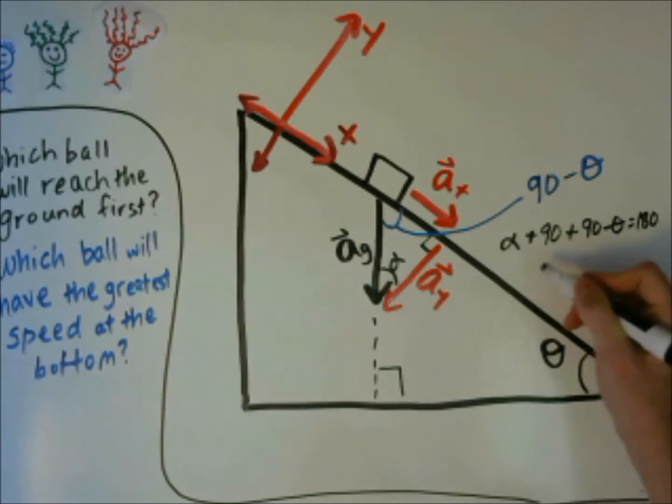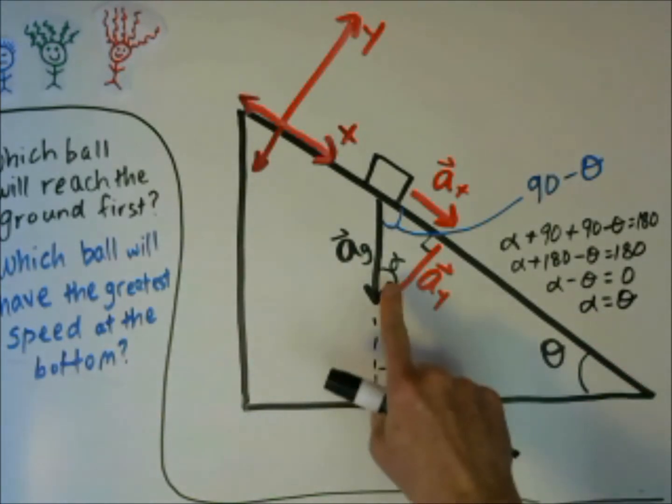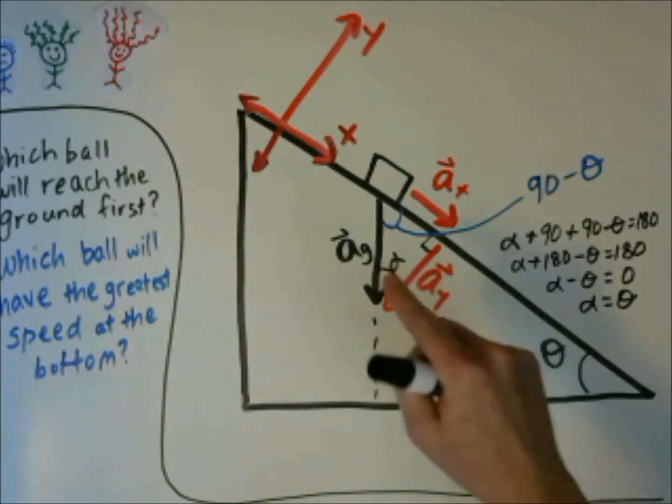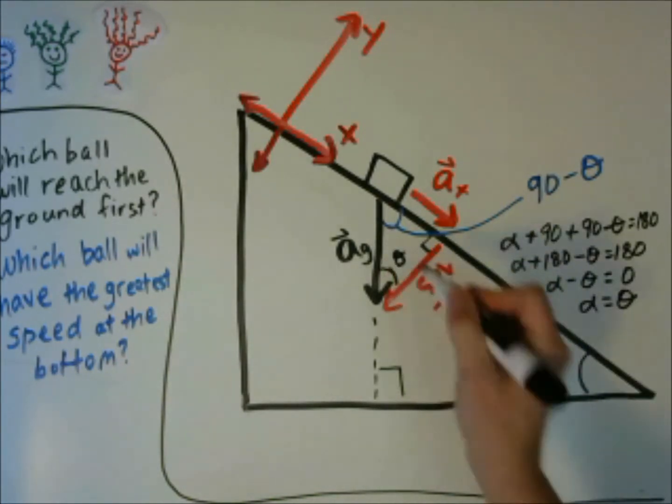Combine these two together. Simplify by subtracting 180 degrees from both sides. And you can see that this angle here, alpha, is equal to the angle theta. So we can actually replace it here. So that angle is theta.